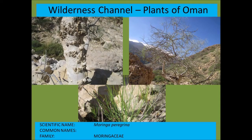This is Moringa peregrina. Moringas have an edible pod — it can be cooked when still green and is edible and nutritious. They produce really long needle-like leaves, almost pine-like in appearance, at least the leaves themselves.